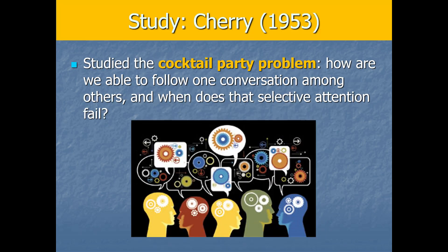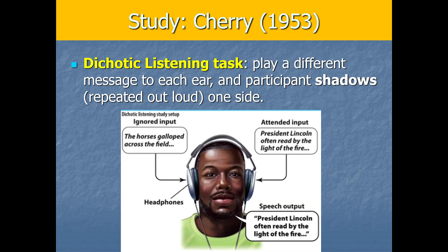I want to start with a classic study by Cherry in 1953 where he studied the cocktail party problem systematically to understand how we're able to follow one conversation among others, and when selective attention might sometimes fail. His clever idea was to put people in headphones that play a different conversation to each ear — just two conversations — enough to study the phenomenon. This is called a dichotic listening task, meaning we play a different message to each ear. He made participants shadow one side, meaning they had to repeat that side out loud, ensuring they were paying attention to it and not the other.